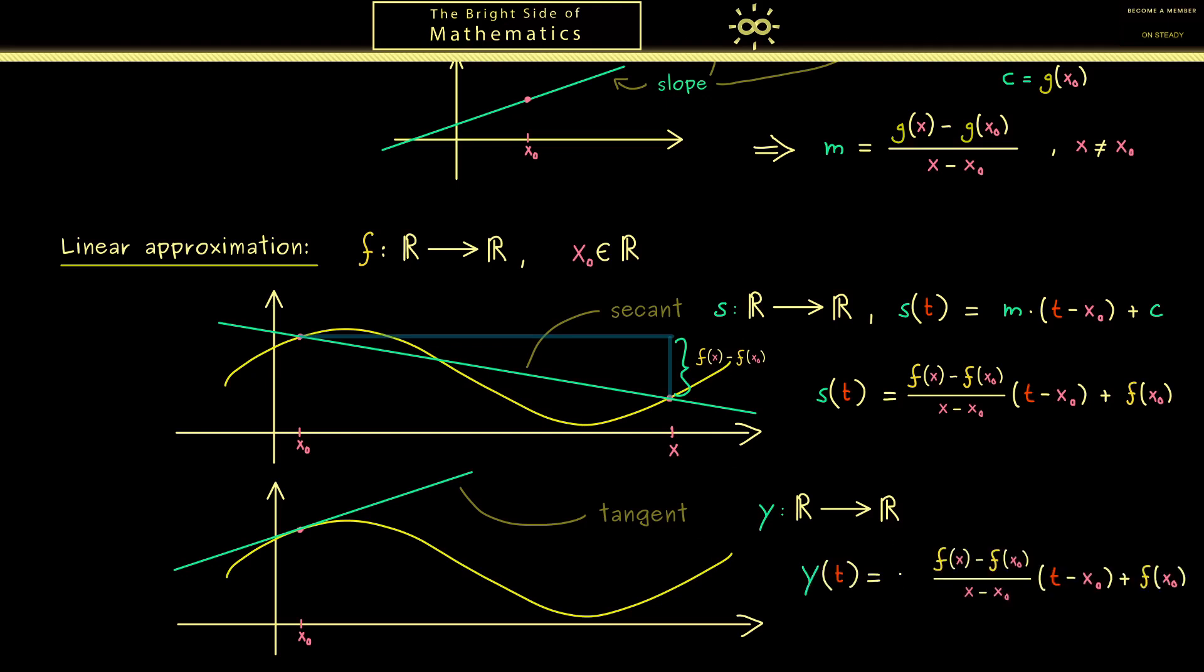It's simply the secant with a limit in front of it. So you see we just have the limit x to x0 for the slope. Hence our only requirement for this linear approximation is that this limit exists. And in this case we can call this number the slope of the function at the point x0.